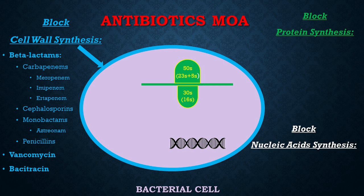Bacteria have evolved by synthesizing a beta-lactamase enzyme that destroys the beta-lactam ring and renders these antibiotics useless. In response, we developed beta-lactamase inhibitors — clavulanic acid, sulbactam, and tazobactam — which block the bacterial beta-lactamase enzymes and allow our beta-lactam antibiotics to do their job.